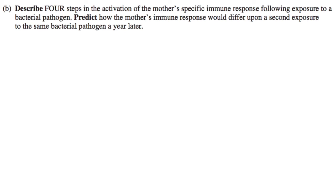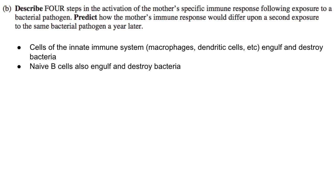Describe four steps in the activation of the mother's specific immune response following exposure to a bacterial pathogen. Essentially, cells of the innate immune system like macrophages and dendritic cells engulf pathogens, digest them, which leaves their antigens behind, and present those antigens on their surface. Naive B cells of the adaptive immune system are also engulfing and destroying bacteria, and these cells will all present antigens to T cells.